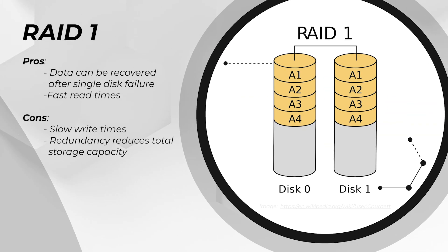Moving on to RAID 1. If RAID 0 and RAID 1 were siblings, RAID 0 would be the wild teenager and RAID 1 would be the very responsible young adult. RAID 1 again takes a minimum of two hard drives, but it has slow write times due to the data being mirrored across the drives.